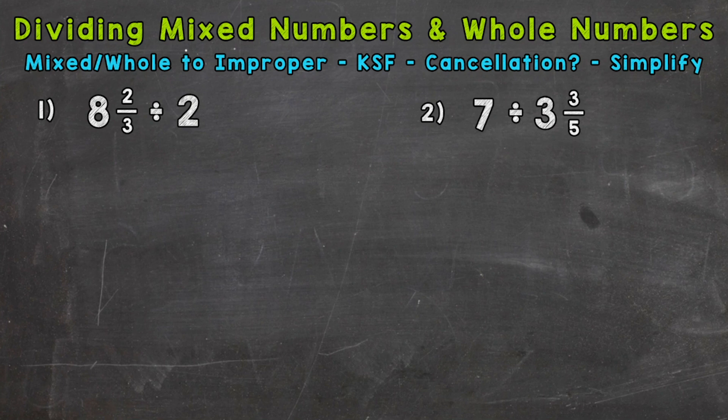The steps that we're going to use to solve these are at the top of the screen. So let's jump into number one, the mixed number divided by the whole number. We have 8 and 2/3 divided by 2. The first thing we want to do is change any mixed numbers or whole numbers to improper fractions. That way we have a numerator and a denominator, and we're able to continue on through our steps.